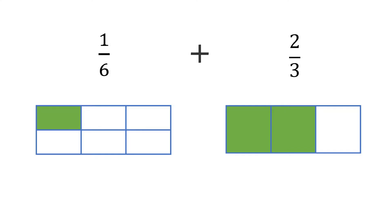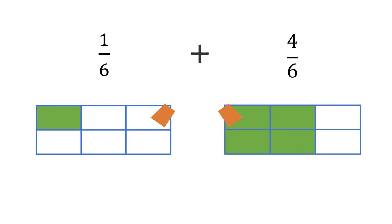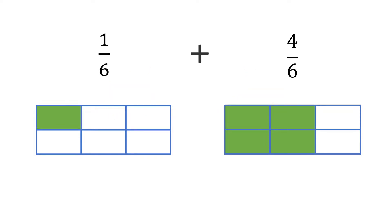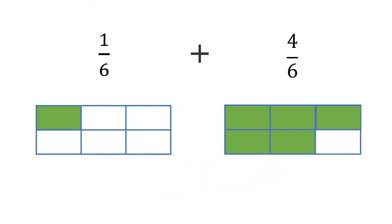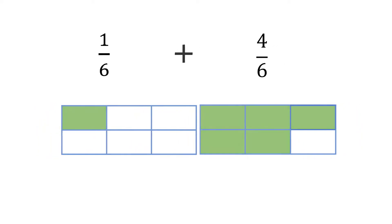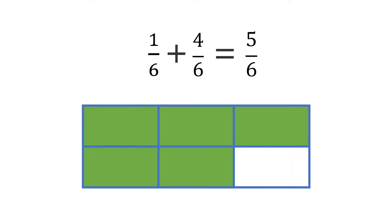we should not combine them because they do not represent the same size pieces. A common denominator will allow us to combine the fractions. As you can see, one part added to the original four parts means that we have five parts. Each part is the same size if the whole is cut into six equal pieces.